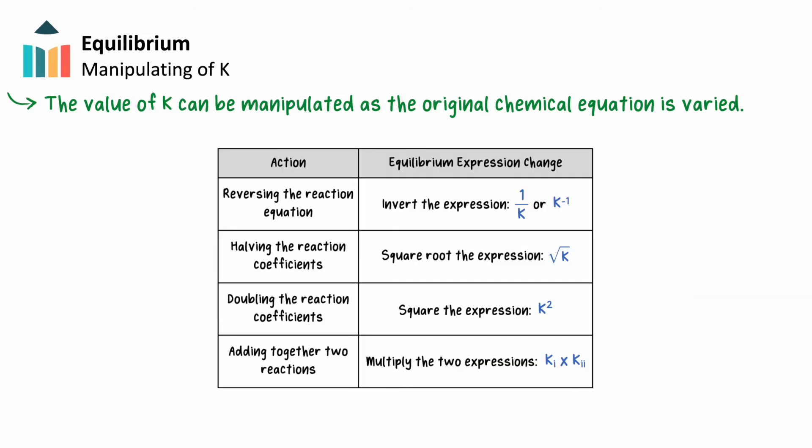In fact, there are many instances where we might manipulate K, some of which are shown here. For example, you may see situations where you square the value of K after doubling the value of an equation's coefficients. Or, if you are adding two reactions together, the K value of the subsequent equation would be the product of the K values of the equations you were combining. In any case, the relationship between the reaction equation and the equilibrium constant expression will always provide the path for determining the effect on the value of K itself.